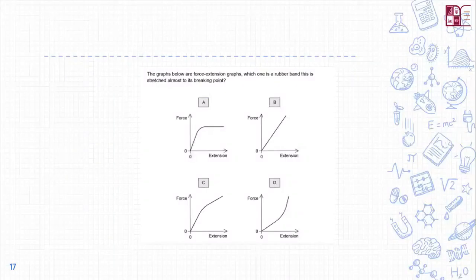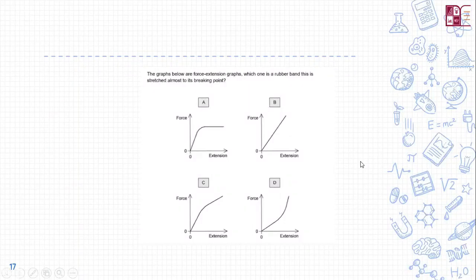Question 6: Which force-extension graph represents a rubber band almost stretched to breaking point? When you stretch a rubber band to its maximum, as force keeps increasing it gets stiffer and harder to extend. Option B shows force increasing at a very high rate without a proportional increase in extension. So option D — where force increases steeply with minimal extension — is the correct answer.